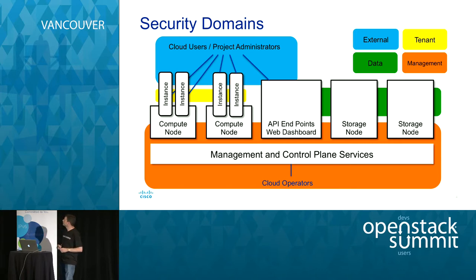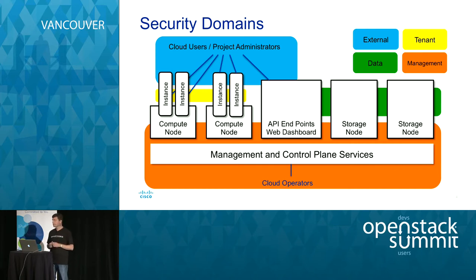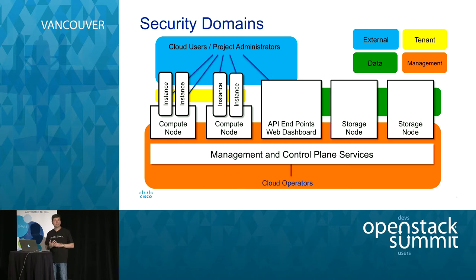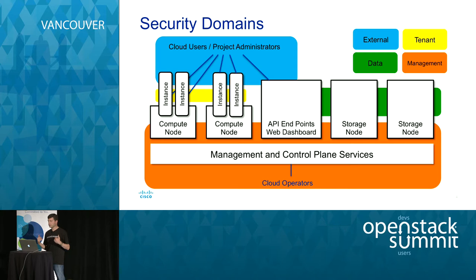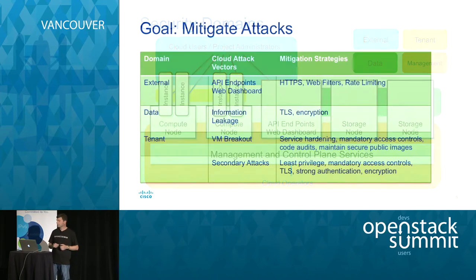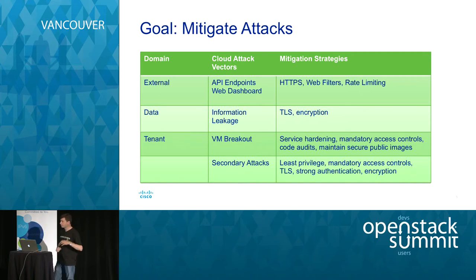The green box to the right is the data domain — where users store their data in storage nodes. You want users to access their own data and not other users' data. And in the bottom in orange is the cloud operators — the management and control plane. You want this layer to be invisible to all other users, and you certainly don't want non-cloud operators to be able to impact that domain. That's the one you really need to lock down and protect. If your cloud is secure, everybody stays inside their box.